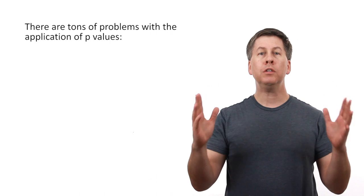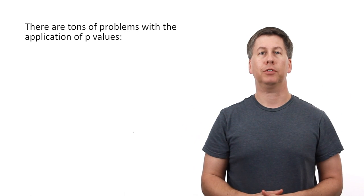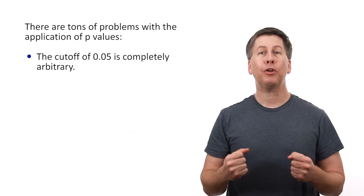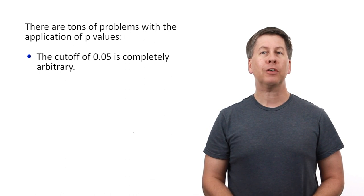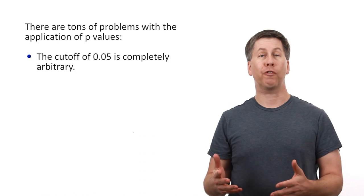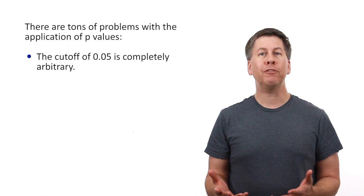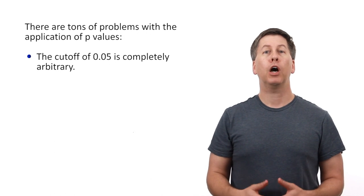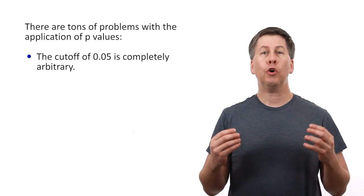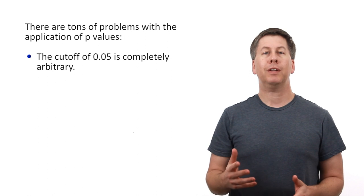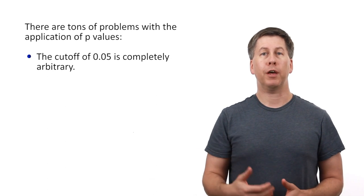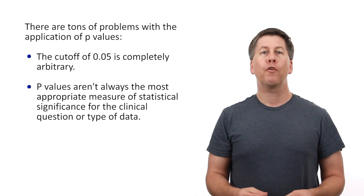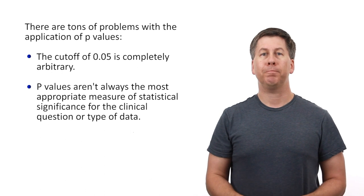Unfortunately, there are tons of problems with the application of p-values. First and most obviously, the cutoff of 0.05 is completely arbitrary. If an intervention is studied and found to provide an outcome benefit with a p-value of 0.045, it's not dramatically more believable than if the observed benefit had a p-value of 0.055. Another problem with p-values is that researchers are so focused on them, largely because they know their potential future readers feel most comfortable with them, that they neglect other statistical tests which may actually be more appropriate for their particular question or type of data.